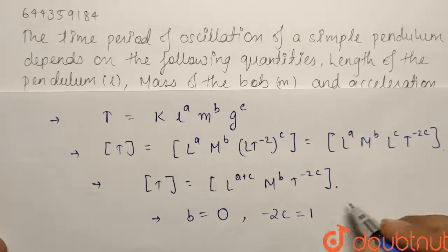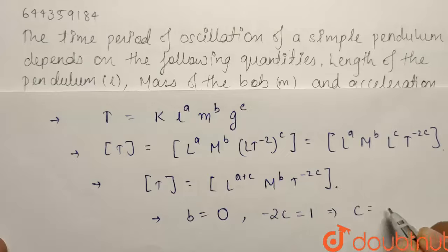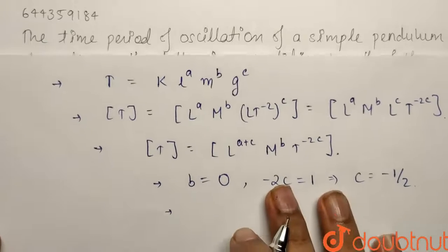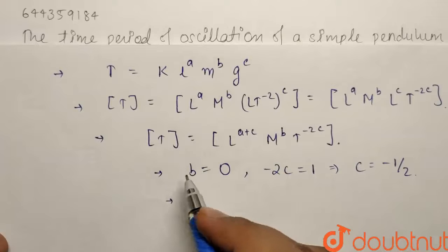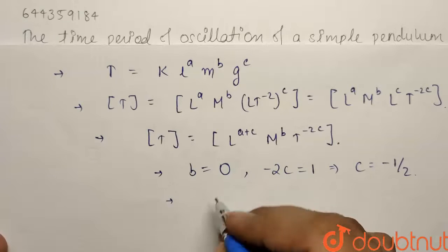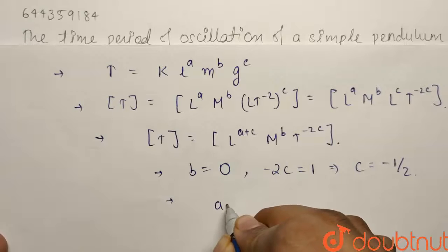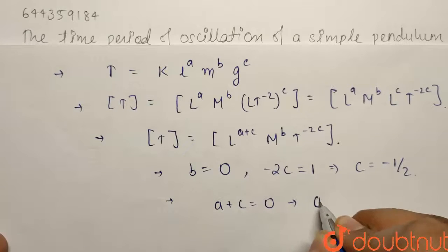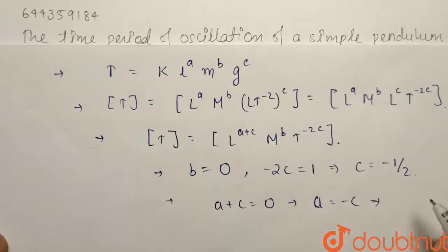So from here c comes out to be minus half. And similarly using the dimension of length, the dimension of length in LHS is nothing but 0, so it will be equals to a plus c equals to 0. So basically a equals to minus c, so from here we get a equals to half.